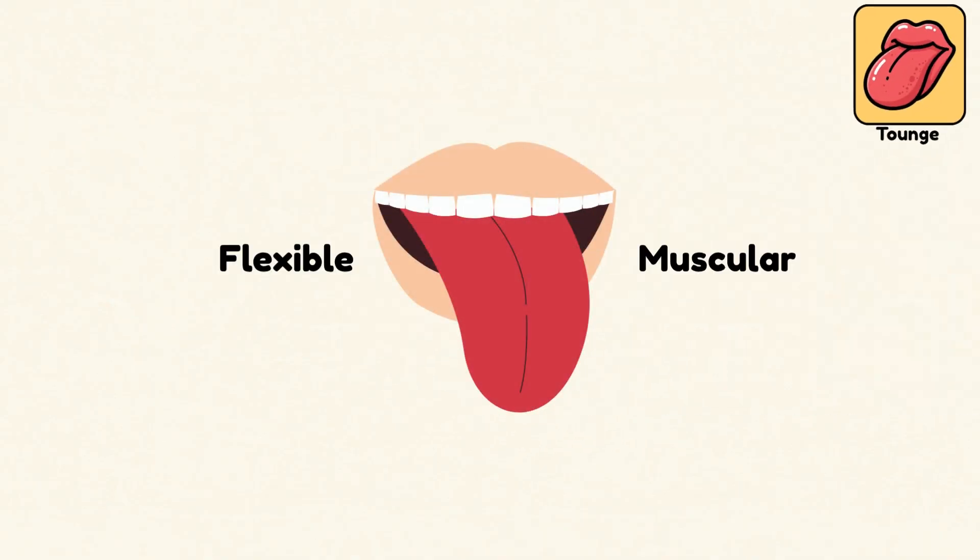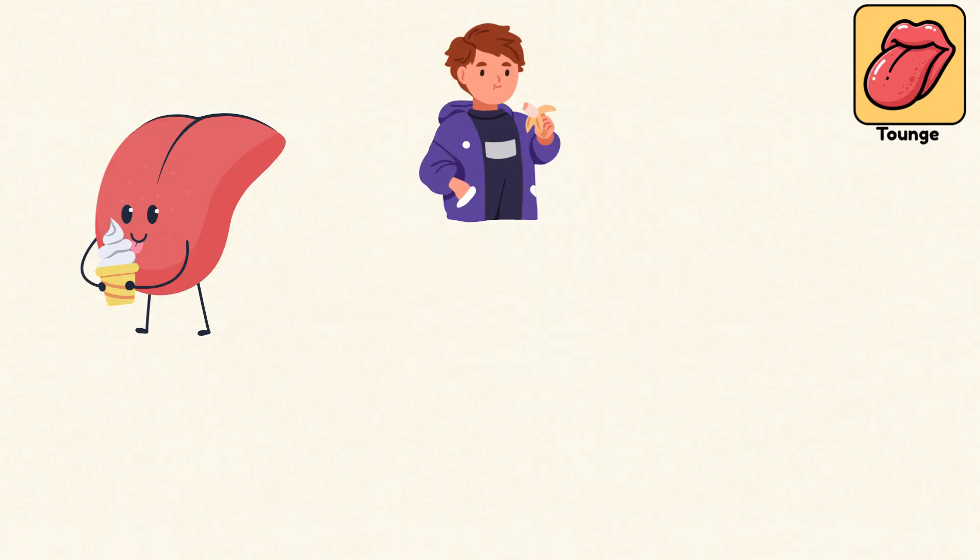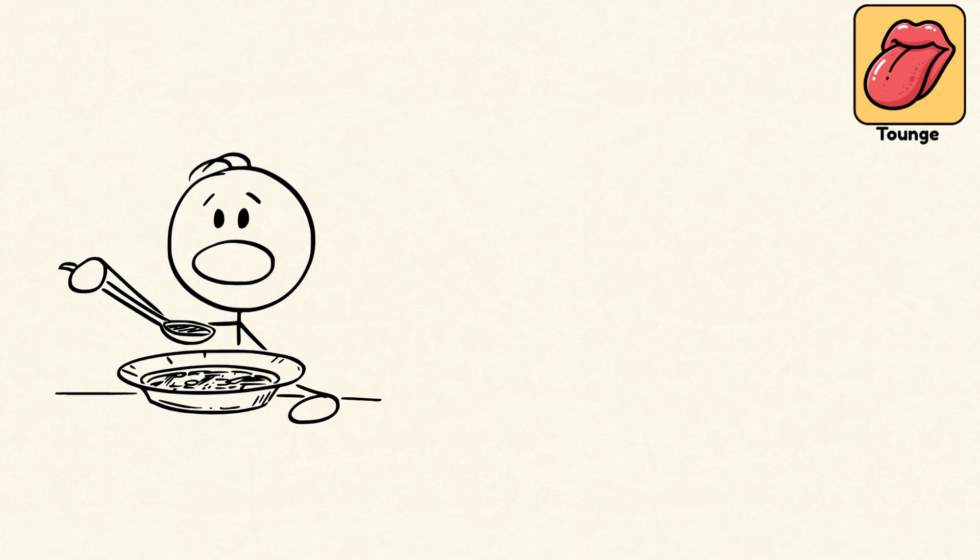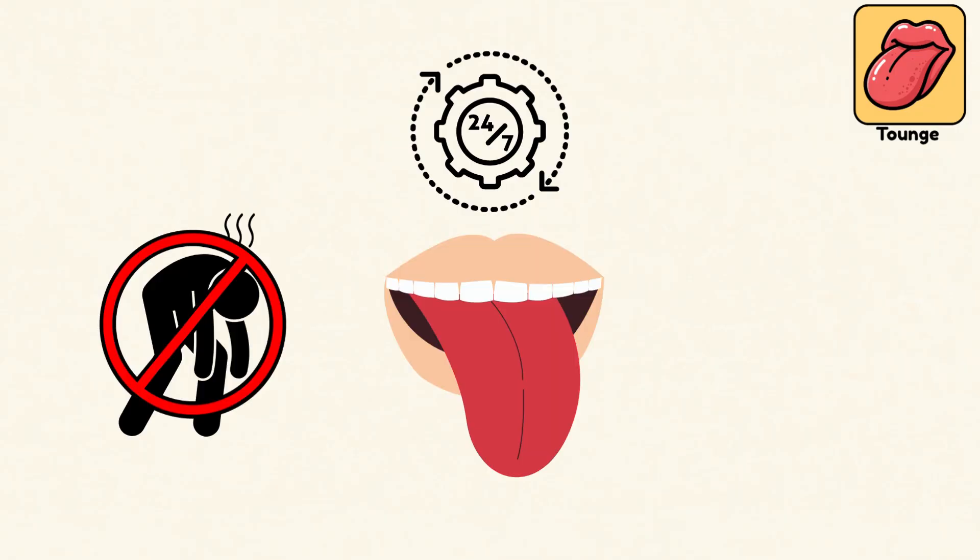Tongue. The tongue is a flexible muscular center, key to taste, chewing, swallowing, and speech. It's covered in taste buds that detect sweet, sour, salty, bitter, and umami. As you eat, it moves food around the mouth and shapes your voice when you speak. It even helps keep your airway open while breathing. It's one of the few muscles in your body that works almost constantly and never tires.